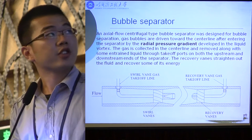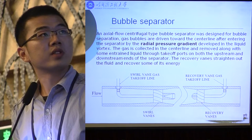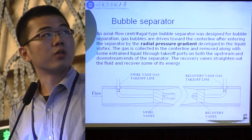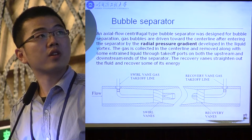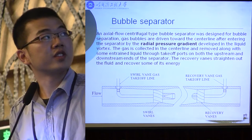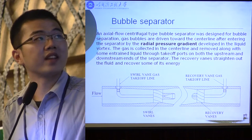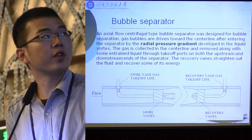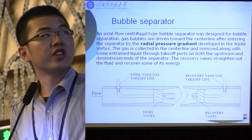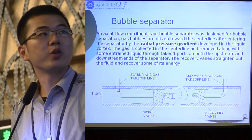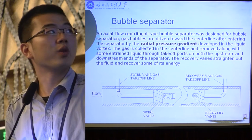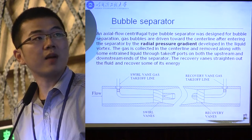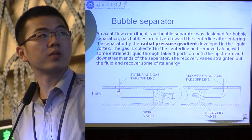An axial flow centrifugal type bubble separator was designed for bubble separation. Gas bubbles are driven towards the centerline after entering the separator by the radial pressure gradient developed in the liquid vortex. The gas is concentrated at the centerline and removed along with some entrained liquid through the takeoff ports on both the upstream and downstream ends of the separator.